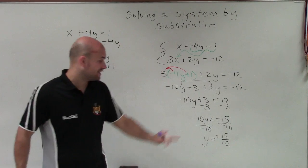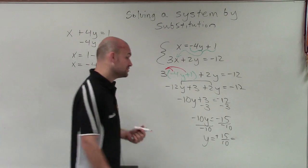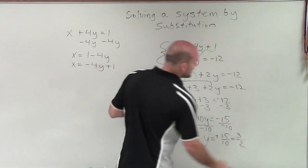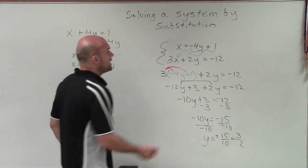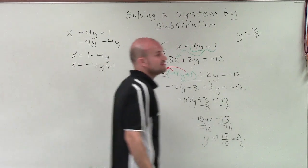Now, remember, I can simplify this, right? I can simplify this by dividing the top and bottom, the numerator and the denominator by 5. I can write this as 3 halves. So the value of y that makes both equations true is going to be 3 halves.